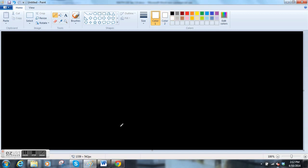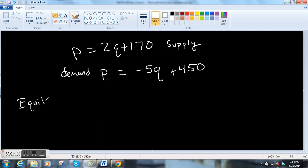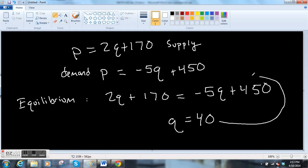You can do this two different ways. You can do it algebraically with a blank piece of paper. My supply function is p = 2q + 170, and the demand function, the price for the demand is p = -5q + 450. To find the equilibrium point, you set these two equations equal to each other. So 2q + 170 equals -5q + 450, and you solve for q.